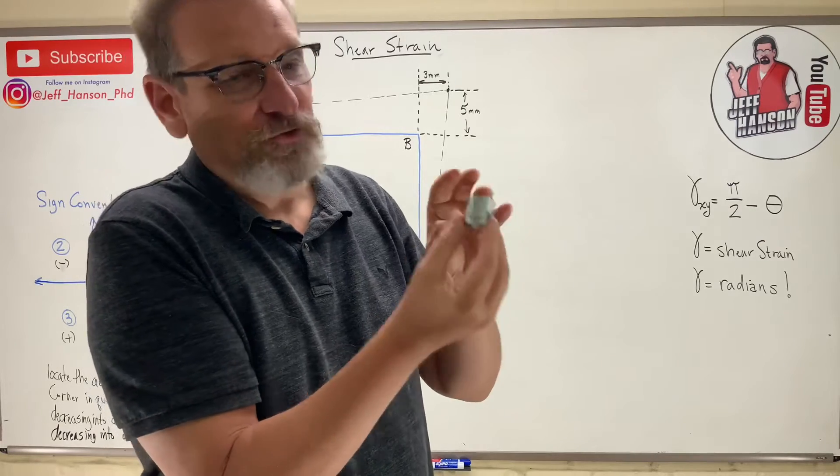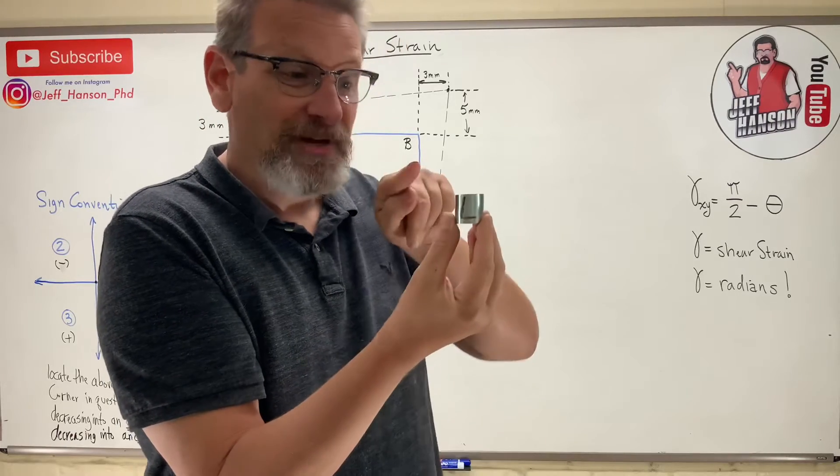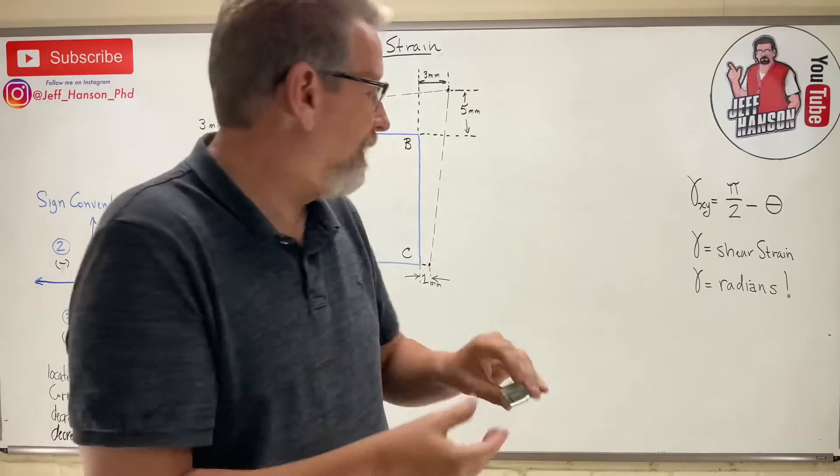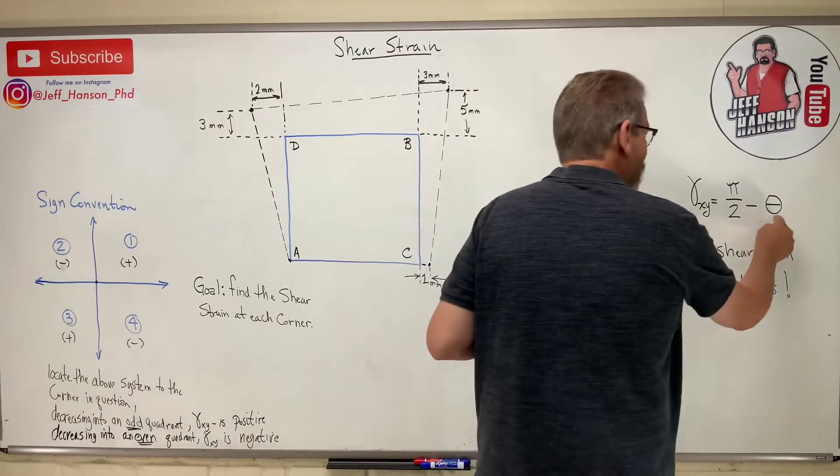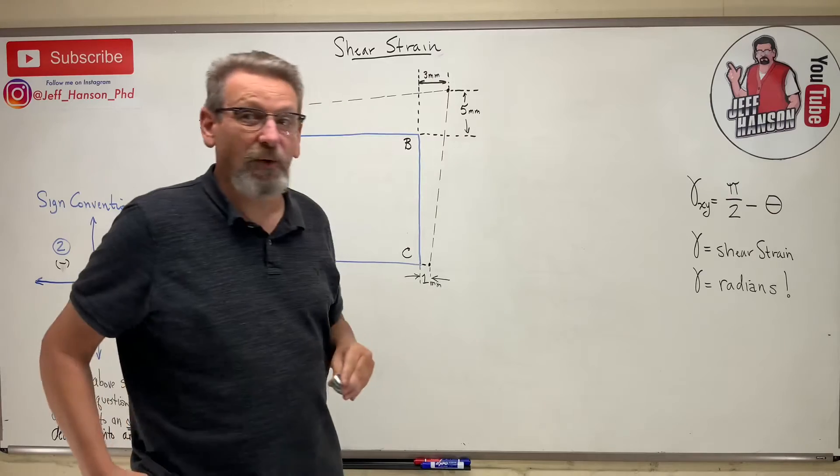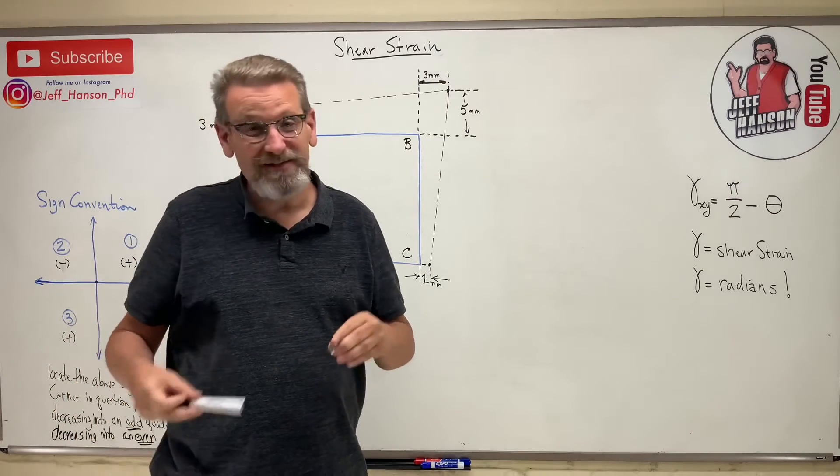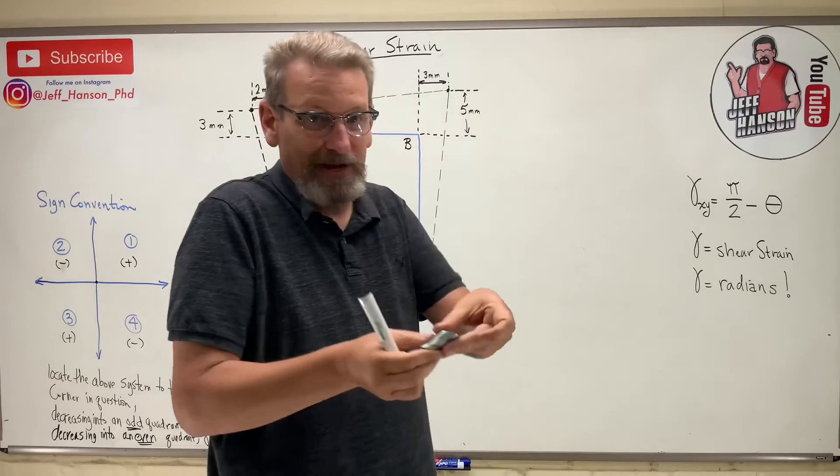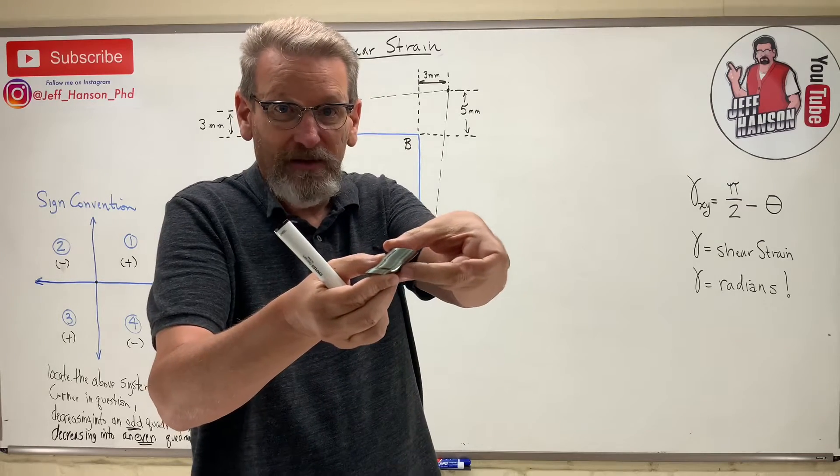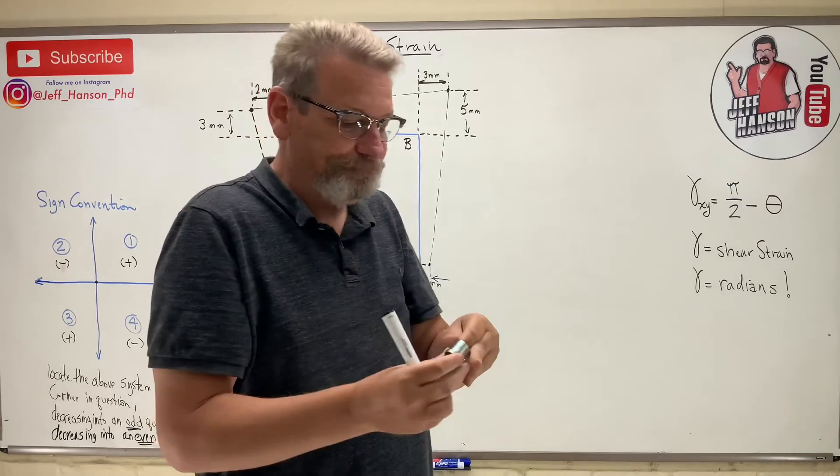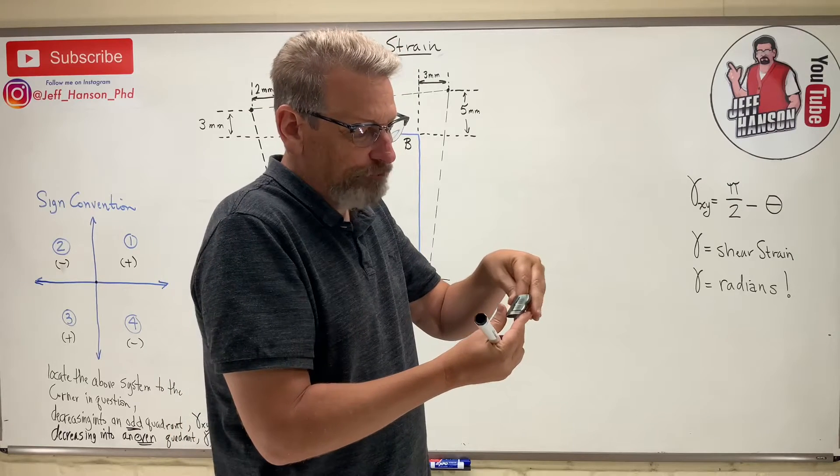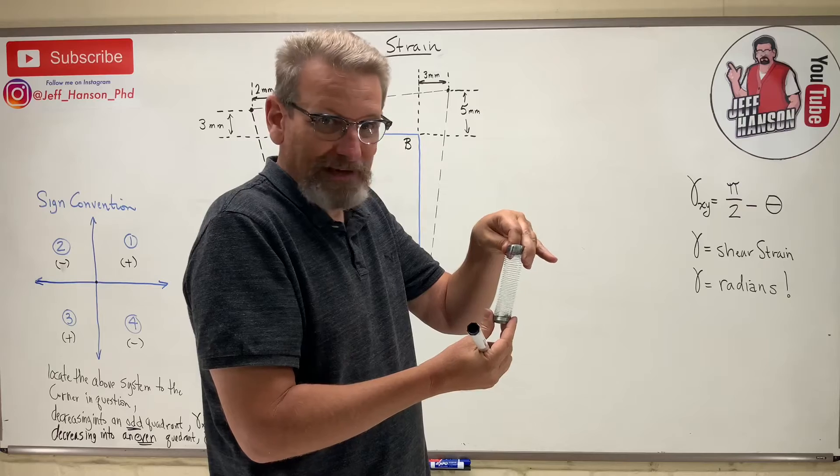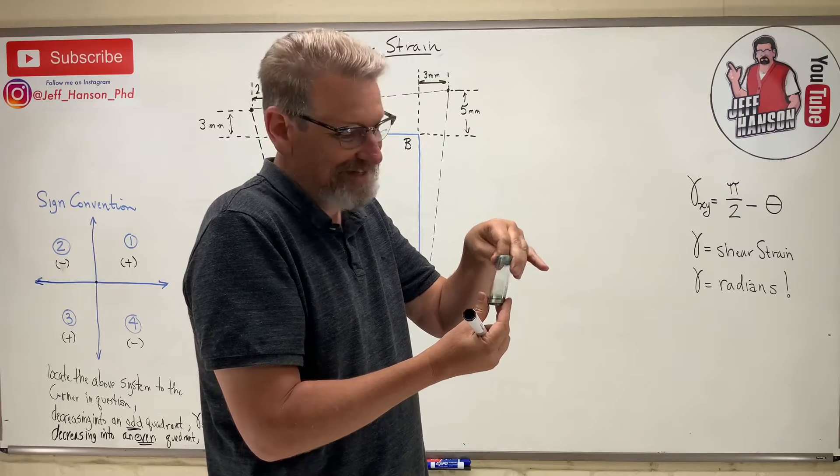And that angle that started out at 90 degrees, but is now something less than 90 degrees is called theta. So theta always starts off at 90 degrees and it ends up something less than 90 degrees when you have shear strain. Think about those planes sliding across each other like each plane is one of the levels or the layers in my slinky here.